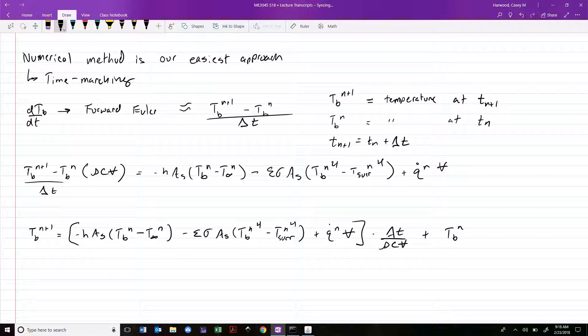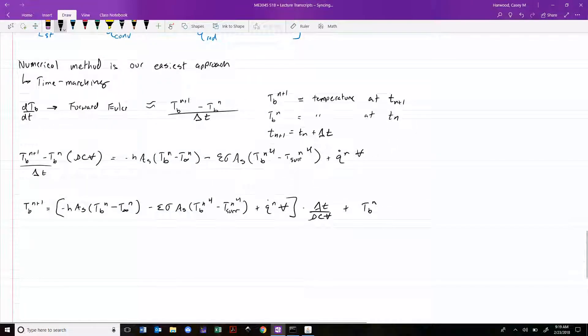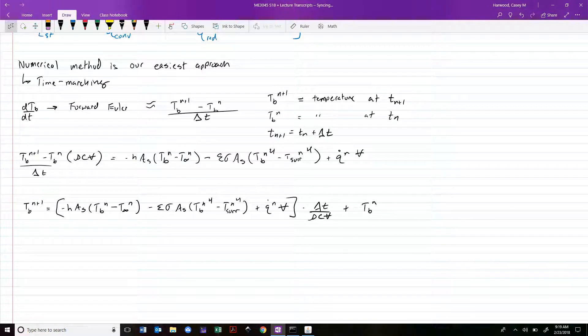So we say T B N plus 1 equals negative H A S T B N minus T infinity N minus epsilon sigma A S T B N to the fourth minus T surroundings N to the fourth plus Q dot N times volume, all times delta T over rho C V plus T B N. Previous temperature, slope of the temperature, and some amount of time through which you're projecting that slope. It's an extrapolation, one step at a time. You can actually solve this very easily in Excel. It's not something requiring MATLAB. I have an Excel problem we don't have time to get through. I'll fill out the sheet and put it up on icon so you can see the way you'd set the problem and solve it in Excel. It's tied to one of the examples in the book. I've made a request for a classroom space to hold Monday's review session, somewhere in Siemens Center, from 6 p.m. to 8 p.m. I will confirm once I hear back from room scheduling. I will post solutions to the practice midterm probably tomorrow, so you can bring any questions to the review session for Q&A.